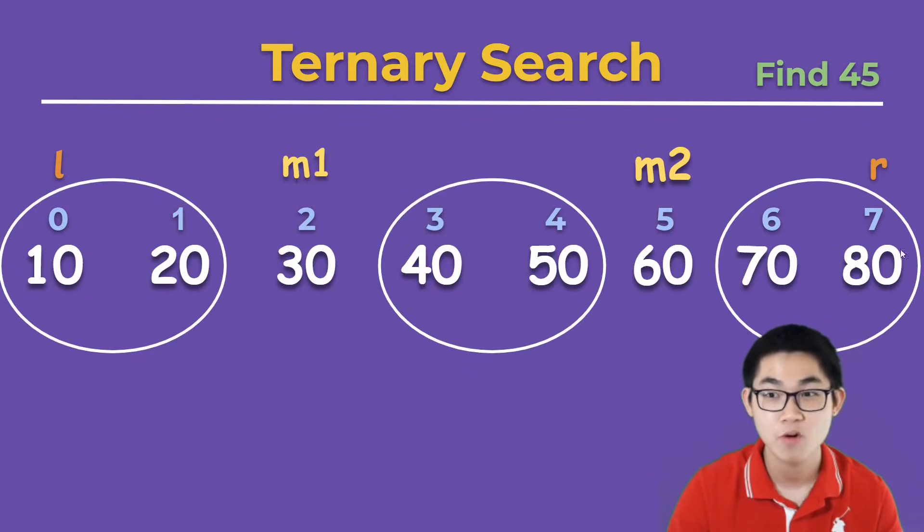Let's try to find number 45. We look at m1, that's not 45. We look at m2, that's 60, which is not 45. But then we notice that 45 is between 30 and 60. So it has to be in the second group.